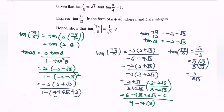Simplify. Finally, tangent(7π/6) = 1/√3. That is the result for this part. Thanks for watching.